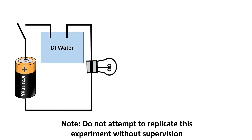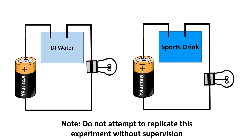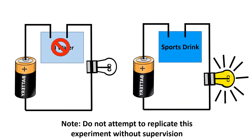Now imagine what would happen if we replaced part of the wire with a tank filled either with distilled water — which is water that has had all its ions removed — or a sports drink that contains electrolytes. If you guessed that only the light bulb in the sports drink circuit would turn on, then you're right. The electrolytes in the Gatorade provide the necessary ions for electricity to travel through the tank and onto the rest of the circuit.